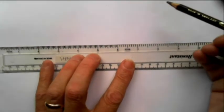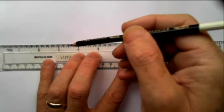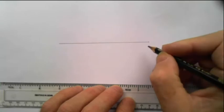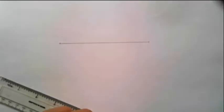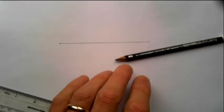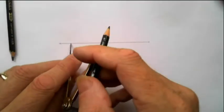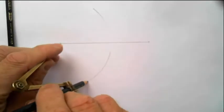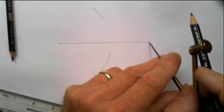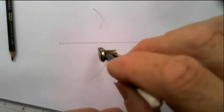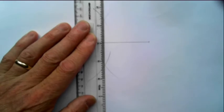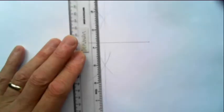First of all, draw a line and divide it in half with a pair of compasses like so, and join the intersections together like that.